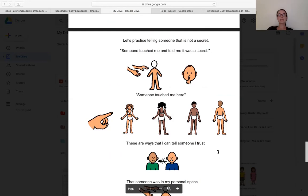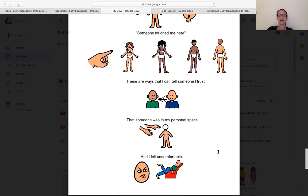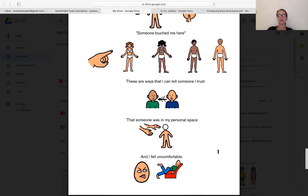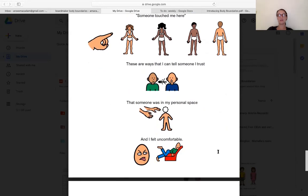Let's practice telling someone that it's not a secret. Someone touched me and told me it was a secret, or someone touched me here. These are ways that I can tell someone I trust that someone was in my personal space and I felt uncomfortable.